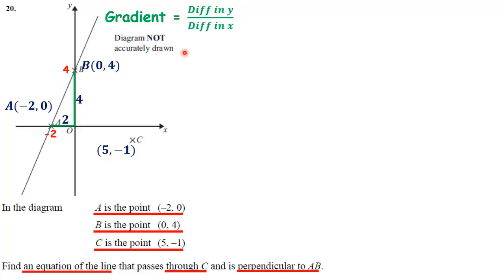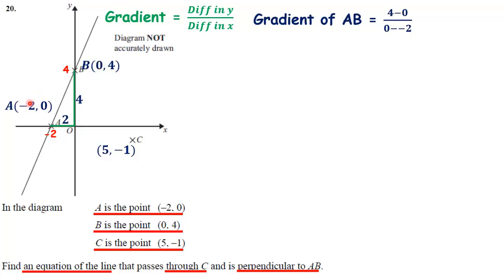The other way — and one you should be really confident with — is that the gradient is the difference in Y's over the difference in X's. Looking at B and A: the Y coordinate of B is four, the Y coordinate of A is zero, so that's four minus zero. The X coordinate of B is zero, the X coordinate of A is minus two, so that's zero minus minus two. A minus and a minus make a plus, so that's four over two, which equals two — just as we got with rise over run. So the gradient of AB is two.